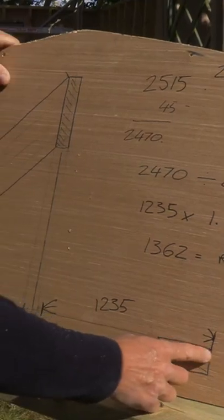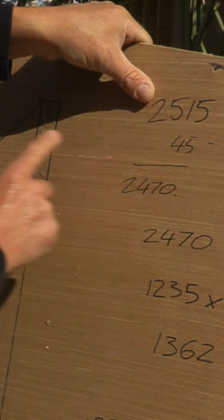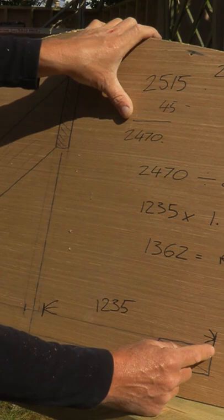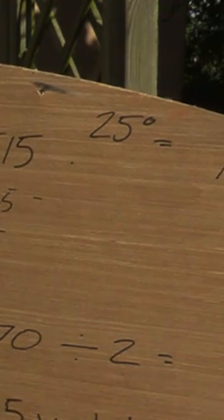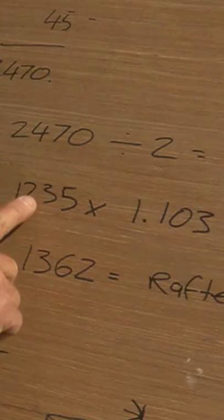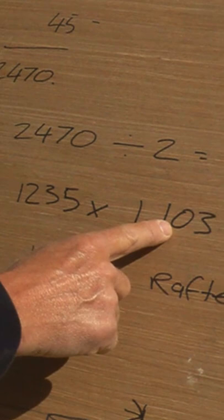Roof plate to roof plate overall the measurement is 2515mm. 45mm is the ridge, so 2515 minus 45mm is 2470. Divide that by two — that gives us 1235 from overall plate to the ridge line. We're going to do a 25 degree pitch roof, and the number on this chart is 1.103. So 1235 times 1.103 gives us 1362.